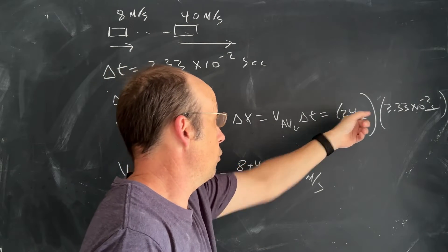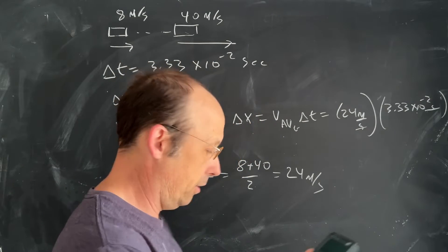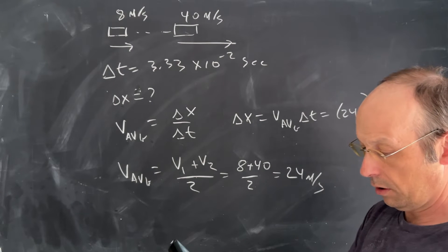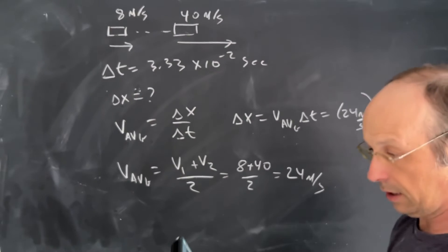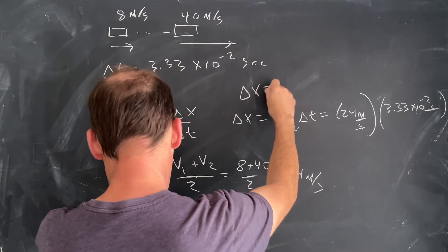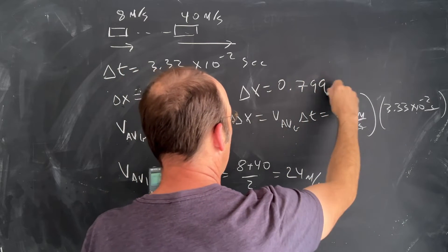So now I'll just have to do 24 times 3.33 times 10 to the negative 2, and then that will give me my answer. So let's do that 24 times 10 to the negative 2 times, and I get delta x is 0.799 meters.